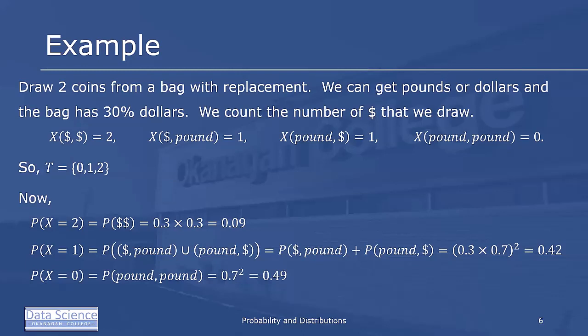The probability that x equals 2 is the probability of dollar-dollar, which is 0.3 times 0.3 or 0.09. The probability that x equals 1 is the probability of dollar then pound union pounds then dollar. Because they're independent events, this is equal to the probability of dollar and pound plus the probability of pound and dollar, which is 0.3 times 0.7 squared or 0.42.